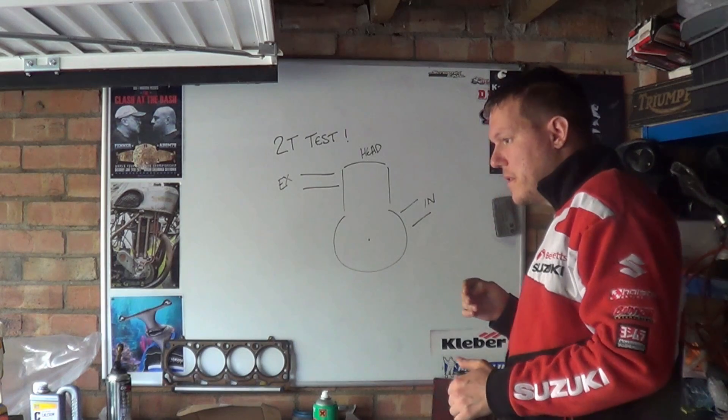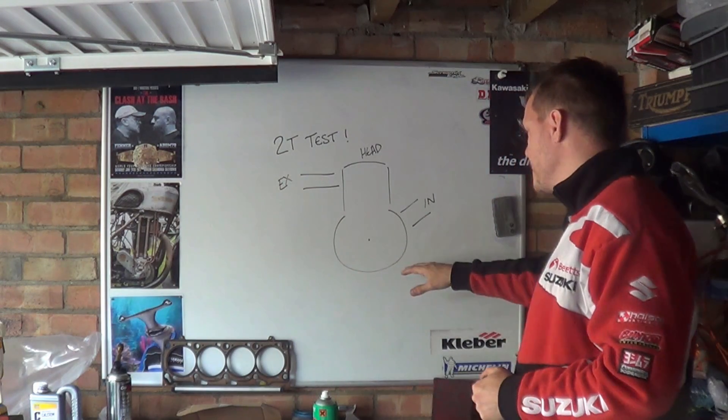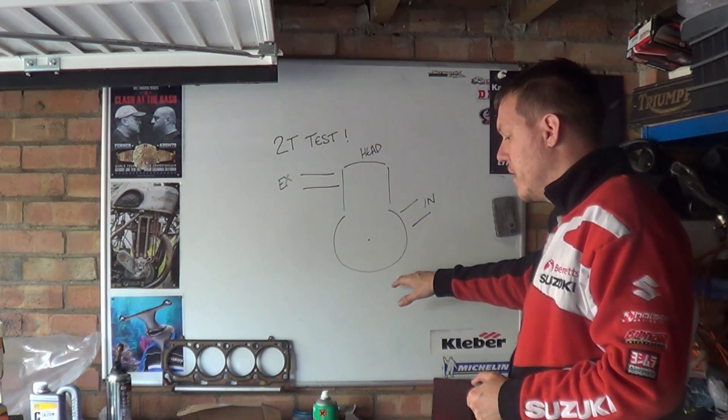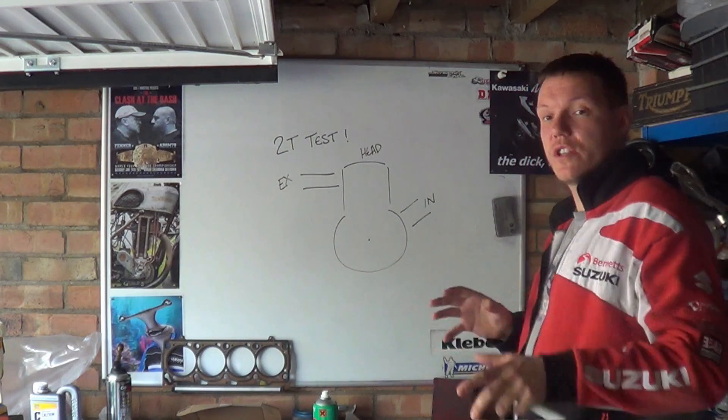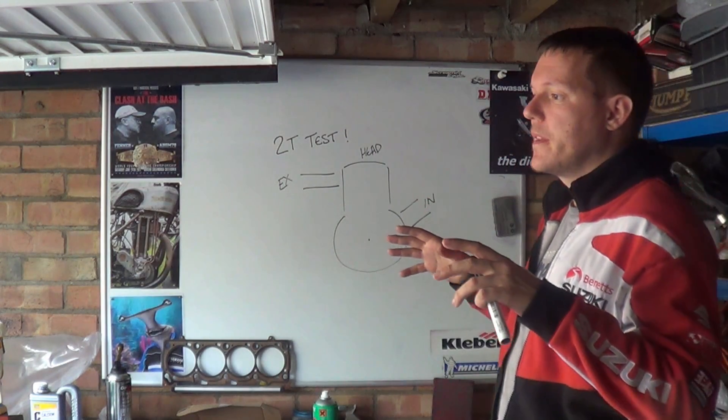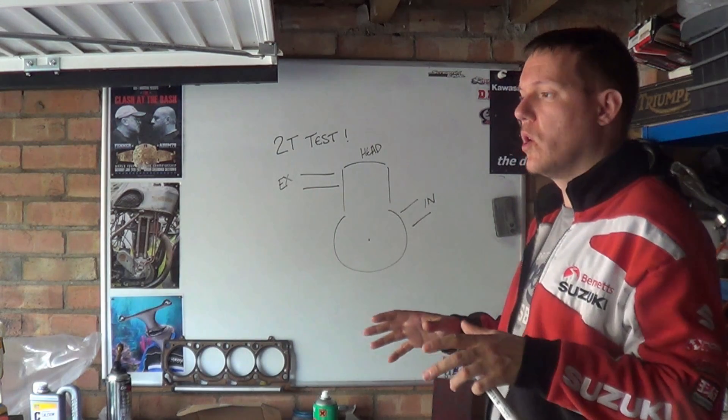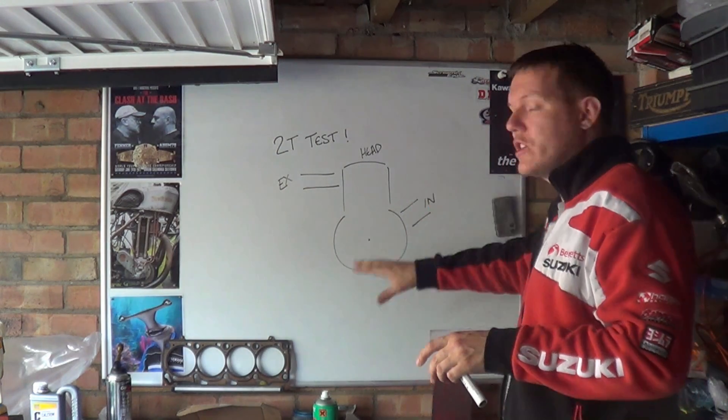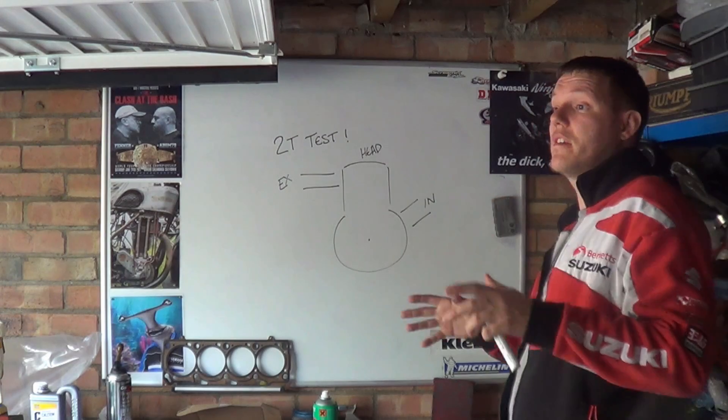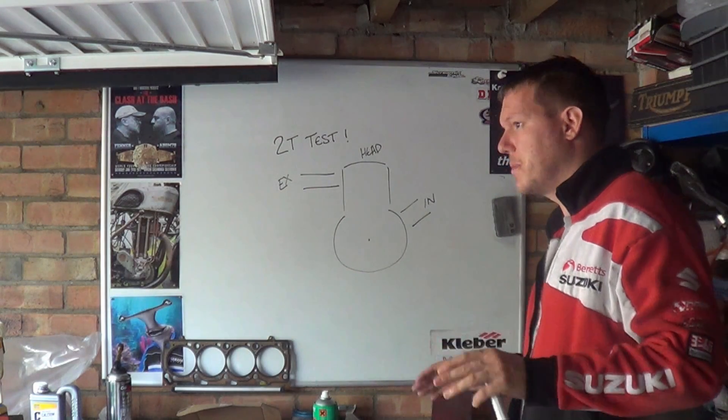And your two-stroke uses pressure differentials. So your reeds basically will open and close depending on which side of the reed has the higher pressure. Just as simple as that.